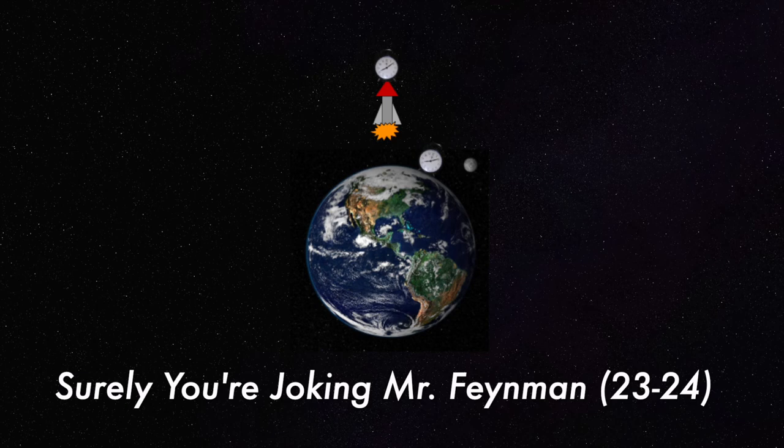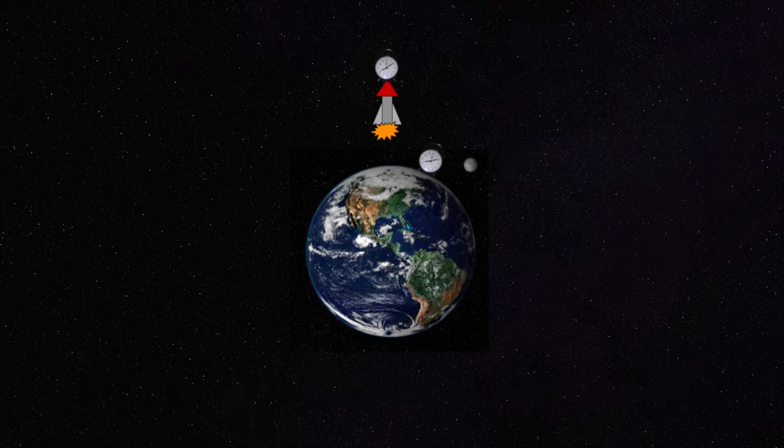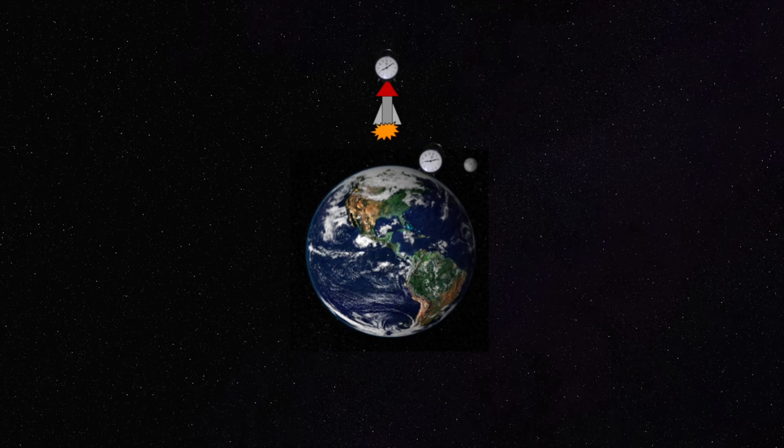According to Einstein, if you go very high, your clock will go faster, because the higher something is in a gravitational field, the faster its clock goes. But if you try to go too high, since you've only got an hour, you have to go so fast to get there that the speed slows your clock down.